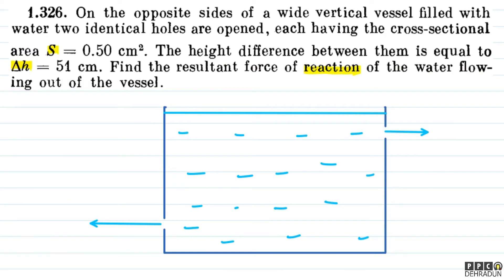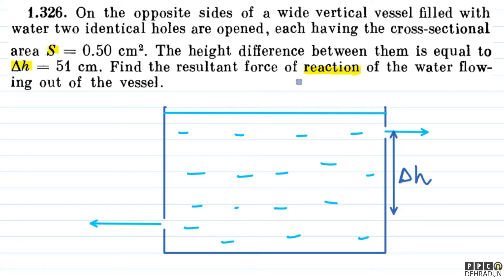So here we have a wide vertical vessel, and on the opposite sides there are two identical holes, both open. The cross-sectional area is the same, capital S. We have to find the resultant force of reaction of the water flowing out of the vessel.